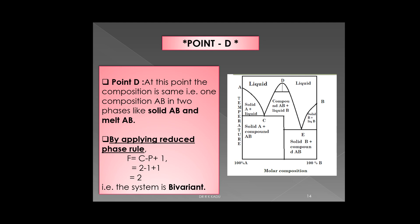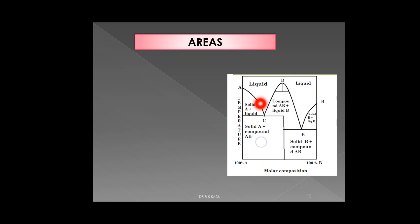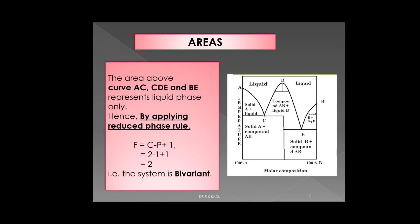After the curves and points, we move to the areas. The area above curves AC, CDE, and BE is a liquid region — only one phase is present, the liquid phase. Applying the reduced phase rule: F = C − P + 1 = 2 − 1 + 1 = 2. The degree of freedom is 2, so the system is bivariant.